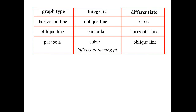If the original graph was a parabola, integrating gives a cubic — and that cubic will inflect at the turning point. Differentiating a parabola gives an oblique line.